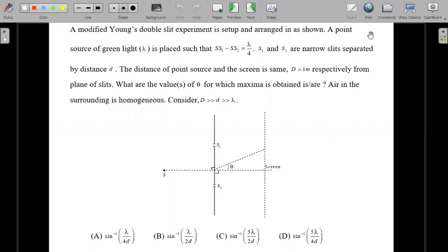So let me go ahead with a formal wording of the question. A modified Young's double slit experiment is set up and arranged as shown. A point source of green light is placed such that SS1 minus SS2, so it's not placed symmetrically, right, asymmetric placement was done so that SS1 looks longer than SS2 by a value of lambda by 4 where lambda is the wavelength of the green light that is used.